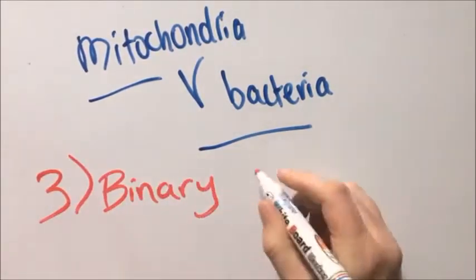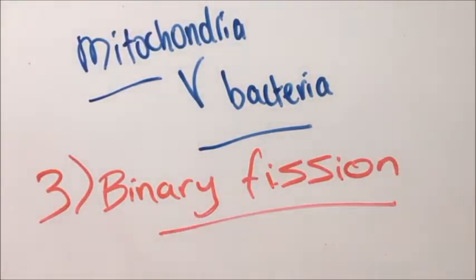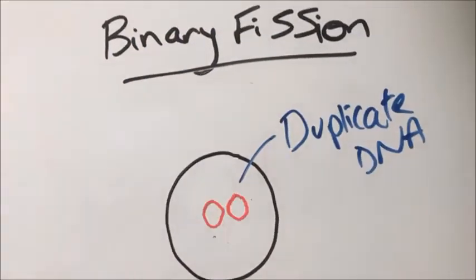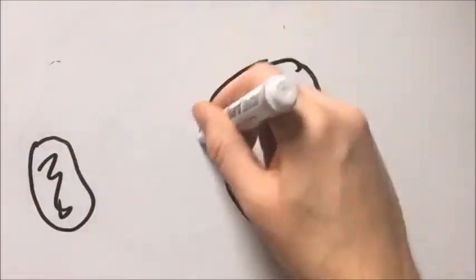Third, mitochondria reproduce in a similar method to bacteria, by binary fission, the pinching together of the membrane after reproduction of DNA to create two mitochondria or bacteria.